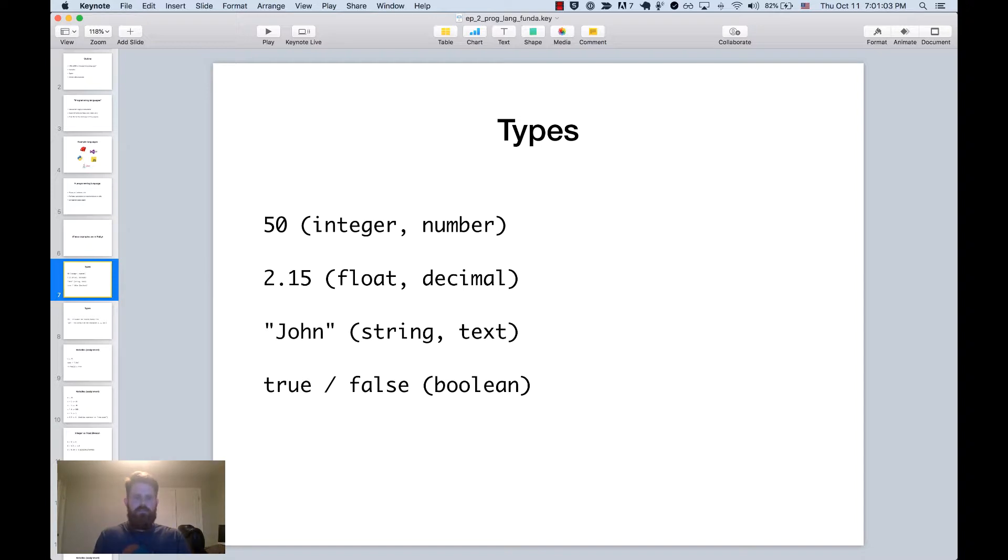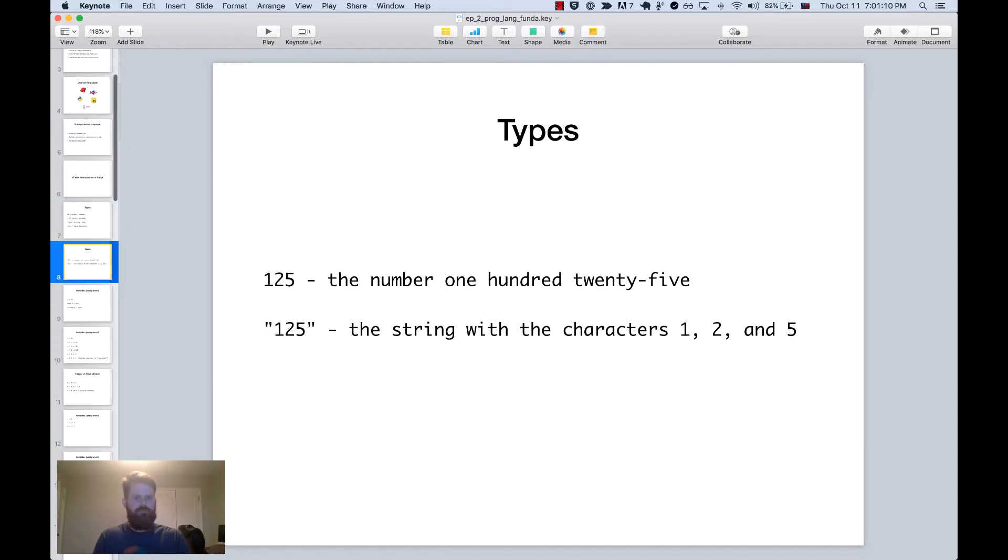So one important distinction. If you look at these two examples, they may look very similar, but the first one is the number 125, which would be represented as an integer by most languages. And then the second one is the string 125, which is really the text or the string of characters 1, 2, and 5. So the top one you can perform math on, and the bottom one you can't because it's not a number. It is the characters 1, 2, and 5 as text. Now I say you can't perform math on it, but some languages are kind of quirky, and you can do math on it. But just as a general rule, these are different things. One is a number, and one is a string, which is text.